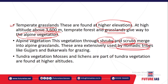These areas are extensively used by nomadic tribes — nomads who move from one place to another in search of pasture with their animals. The Gujjars and Bakarwals of Jammu and Kashmir, Himachal Pradesh, and Uttarakhand move with their herds from the lower reaches to the higher reaches of the Himalayas to use the alpine vegetation as pasture land.